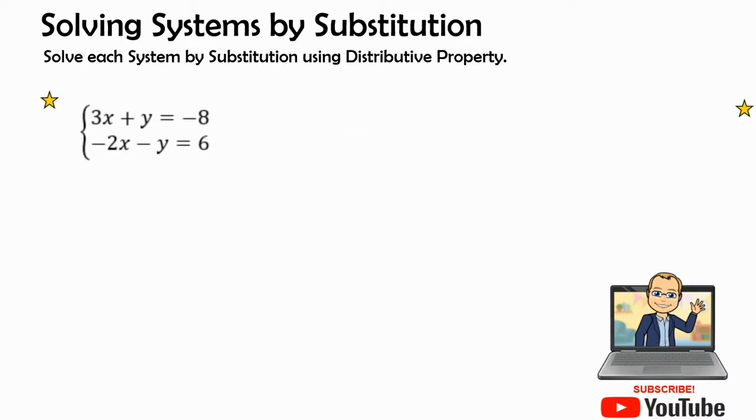I see on this first problem that I have 3x + y = -8, and all I have to do is get this 3x to go on to the opposite side by adding its inverse. I can easily see that now I have y by itself, and then I have this expression which is -3x - 8.